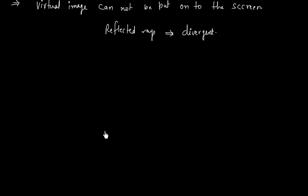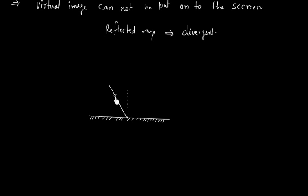Now let us consider the same plane mirror, but this time the ray that is coming is convergent. Let us say one ray is coming in this direction, and this ray will reflect back in this direction. We have another ray coming here, and this ray will also reflect back.